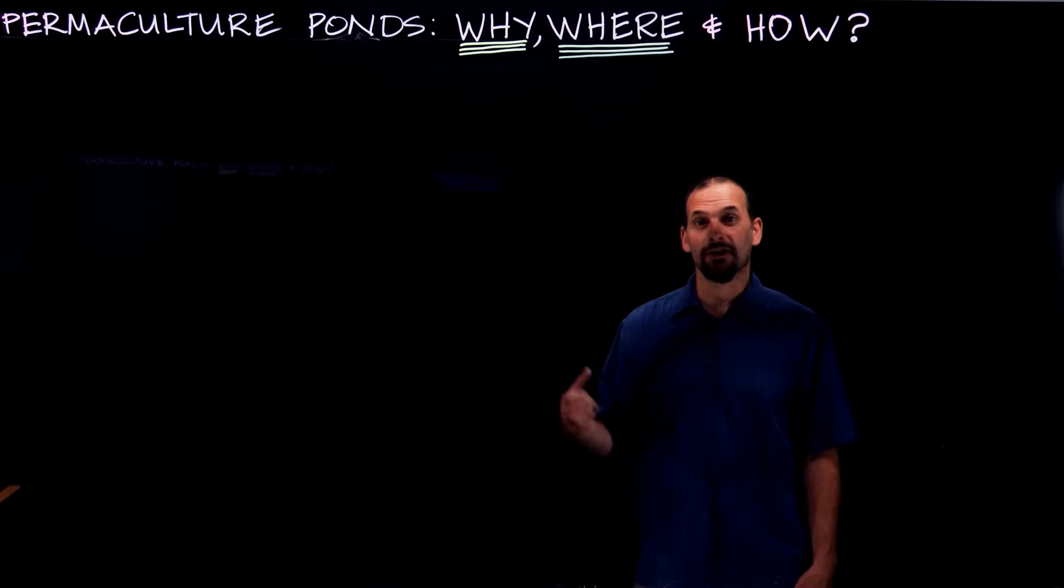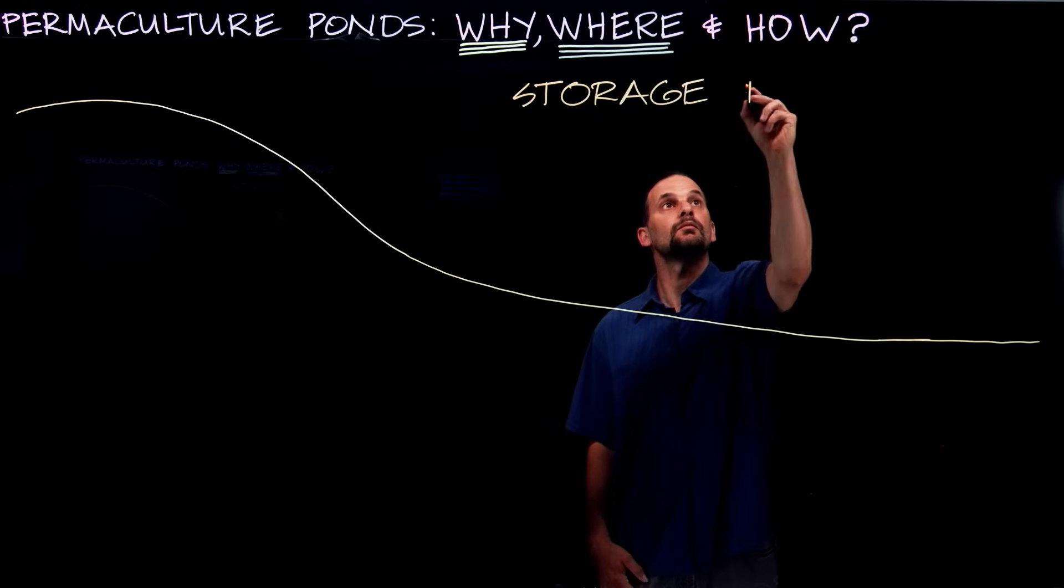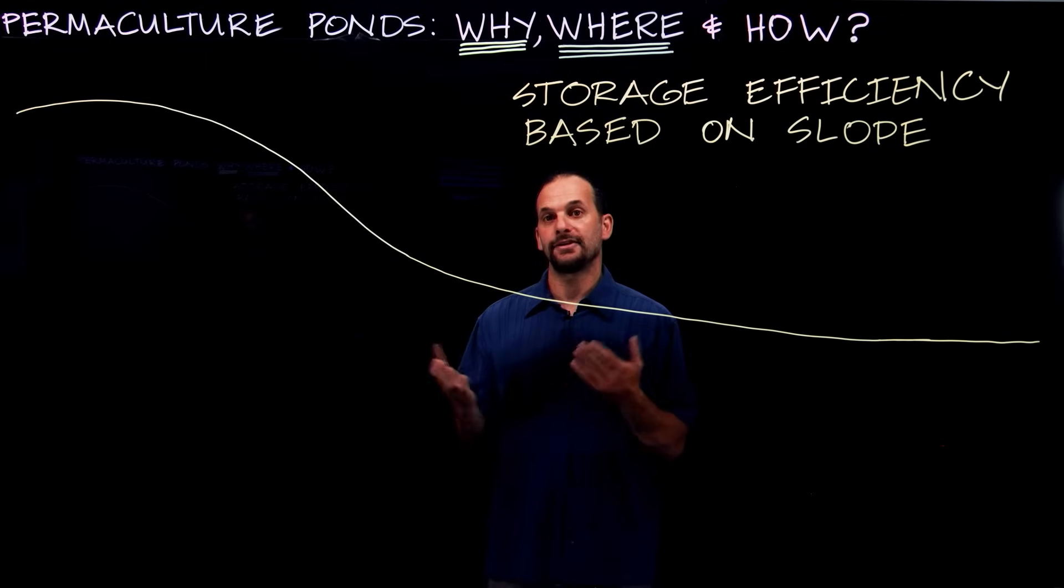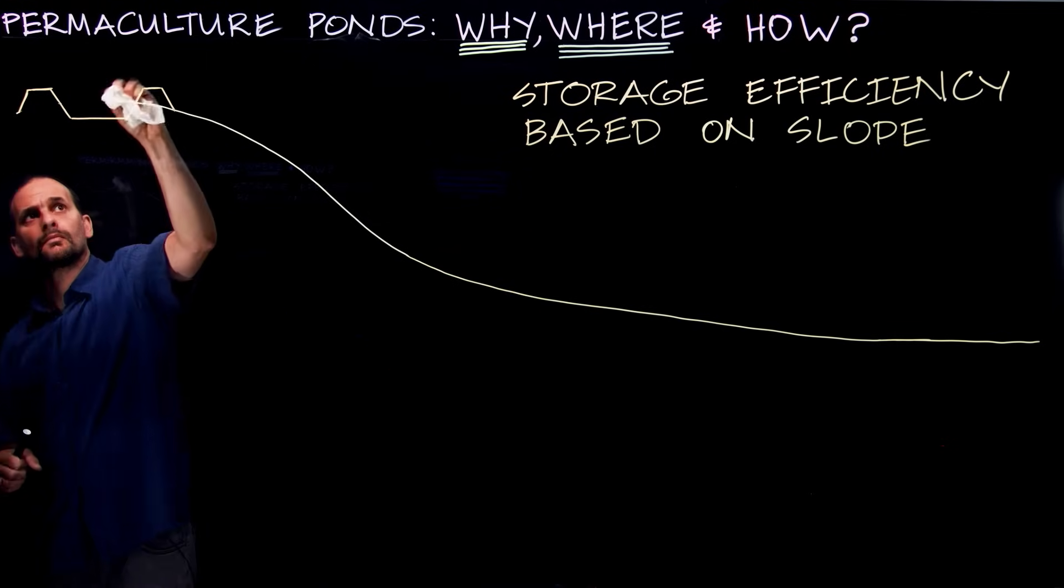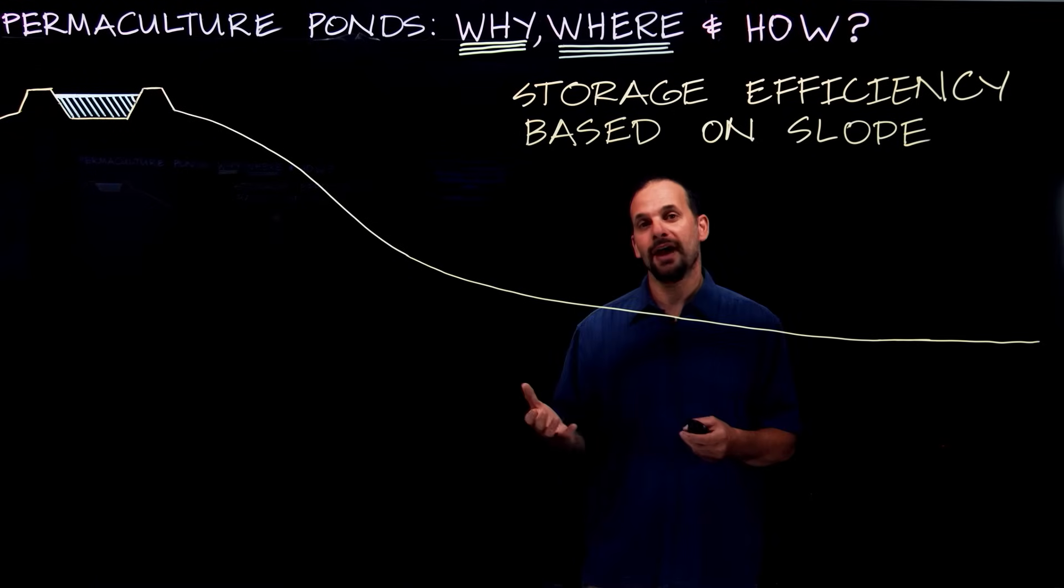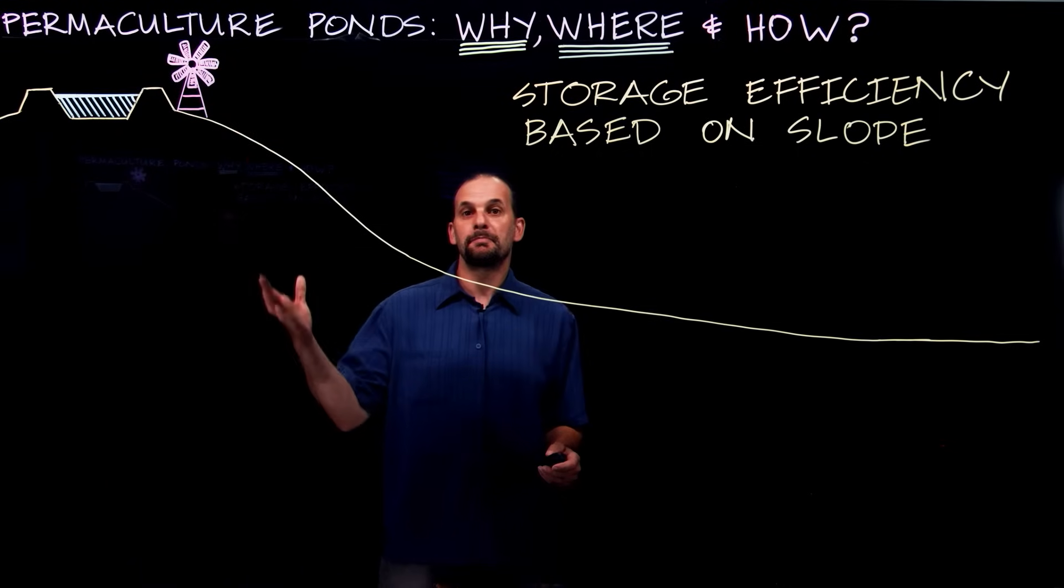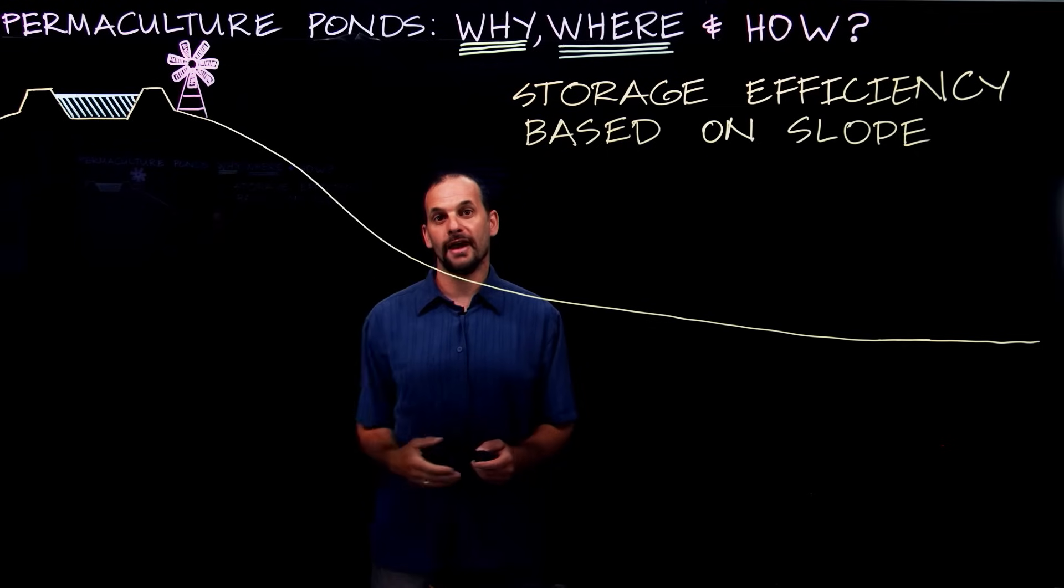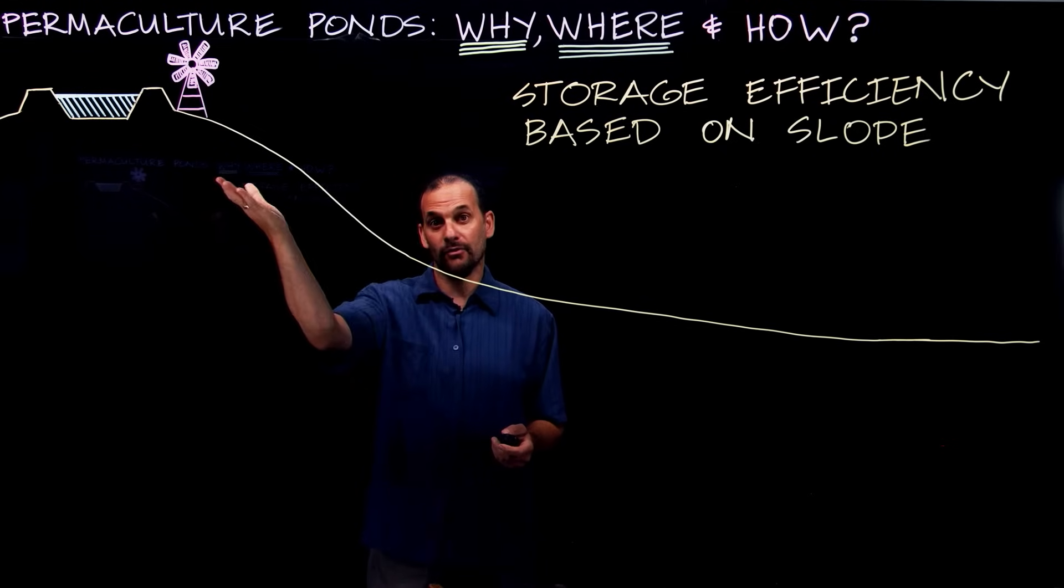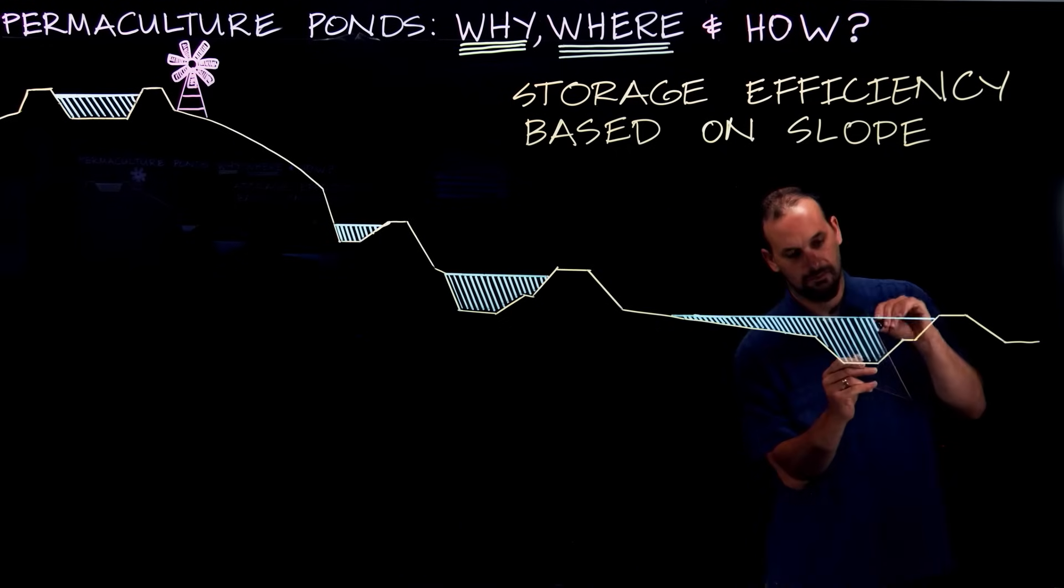So let's start by looking at where on the slope you place a pond in relation to its storage efficiency. At the high point of a slope at the top of a hill, water can be stored in a pond for a high supply to gravity feed the areas below, but without any runoff flowing into it from anywhere on the landscape. So it would need to be filled somehow from below. So as big of a hole as you're able to carve out is as much water that you can store, if you have the right soil type and don't hit a shallow bedrock when you dig.